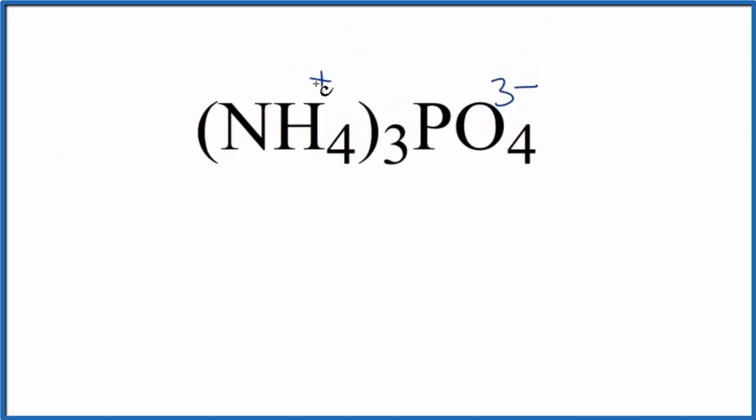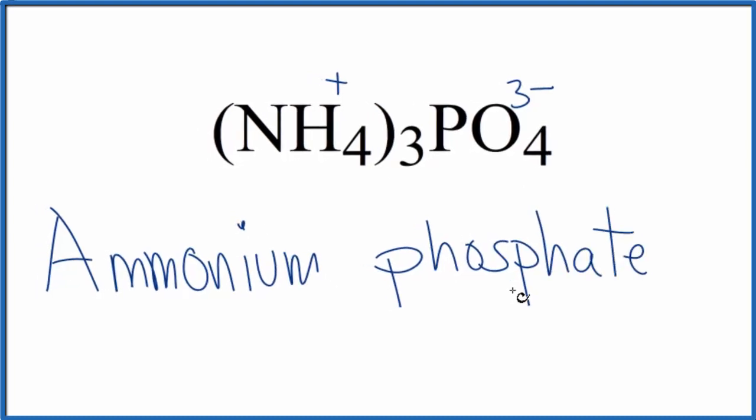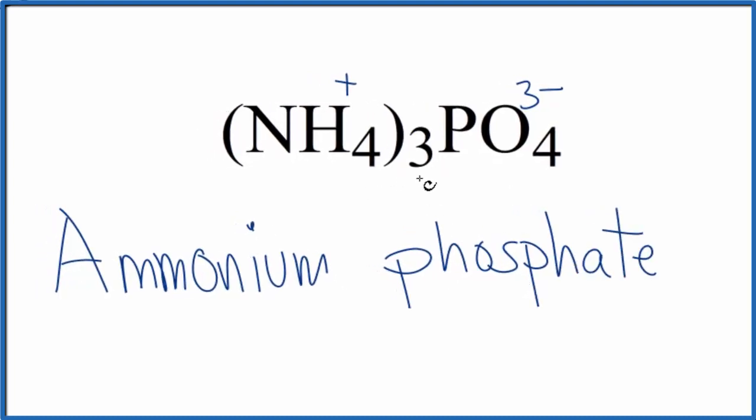So we write ammonium for the NH4, and then for the phosphate, we just write phosphate, lowercase p, and this is the name for NH43PO4,